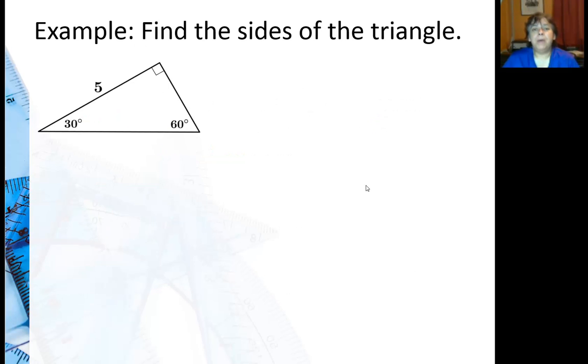So let's look at this example. I have a 30-60-90 triangle. I know the long leg, and I know it's long because it's across from the 60 degree angle. That's bigger than the leg across from the 30 degree angle. So I need to find the other sides.